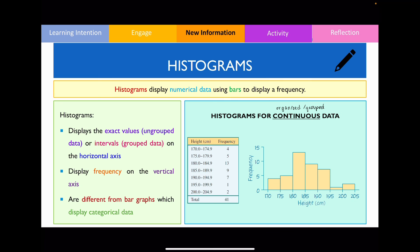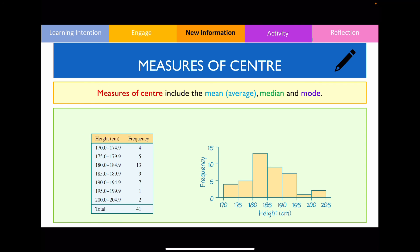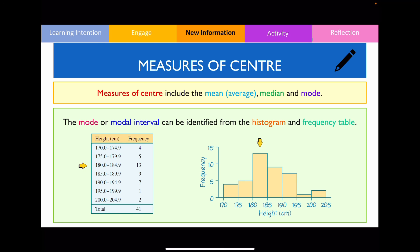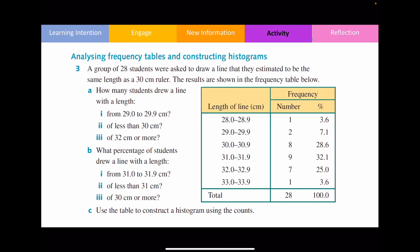In contrast, when dealing with histograms of grouped continuous data, the bars are located in between the class intervals themselves. Lastly, let's look at how to find measures of center from a histogram. The measures of center include the mean, median, and mode. From a frequency table or histogram, we can easily identify the mode — also referred to as the modal interval — which is the value or range of values with the most responses. In this example, the modal interval is between heights of 180 and 184.9 centimeters.